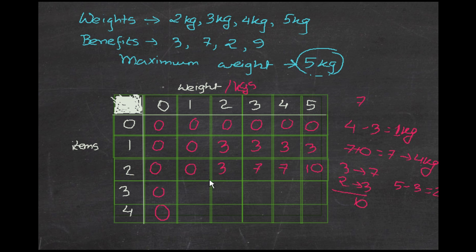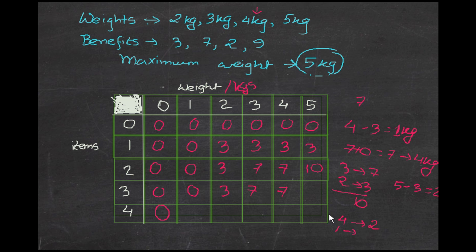Moving on to the third item, which starts at 4 kg. Cells before 4 kg remain the same. At 4 kg, the benefit of the third item is 2, which is much lower than 7, so we keep 7. For 5 kg: the third item (4 kg, benefit 2) leaves 1 kg remaining; the previous cell for 1 kg is 0, so 2 plus 0 = 2. Since 2 is still lower than 10, we keep 10.